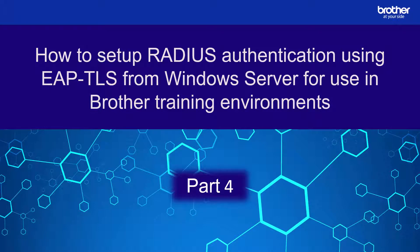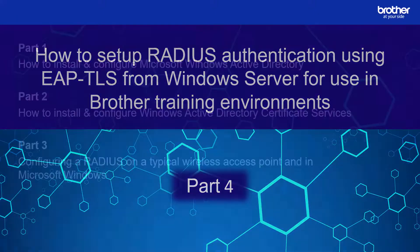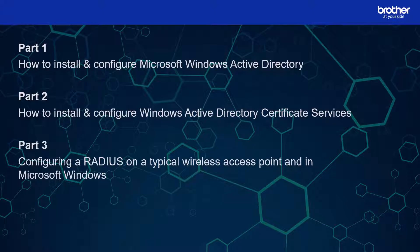Hello and welcome to part 4 of my mini series of how-to security videos, where I am going to show you how I configured RADIUS authentication using EAP-TLS from Windows Server for use in Brother training environments. Please note that this is a continuation from parts 1, 2 and 3, so unless you are watching this as a refresher course I recommend you watch them first.